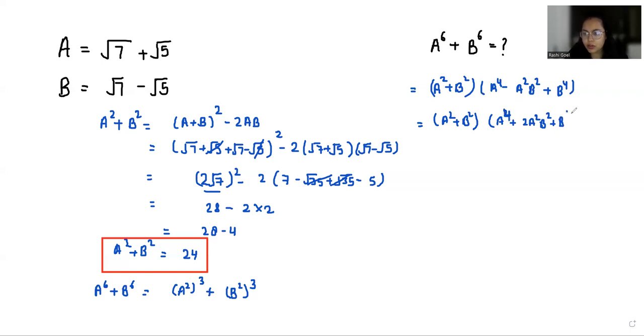So A square plus B square times it becomes identity of A square plus B square whole square, minus negative minus is negative 3 A square B square. Now the value of A square plus B square is 24 from here, so 24 times 24 square minus 3 times A square B square is 2, so 2 square is 4.